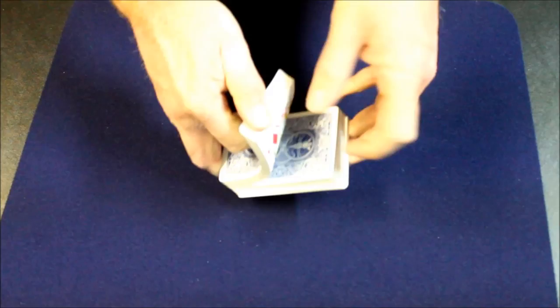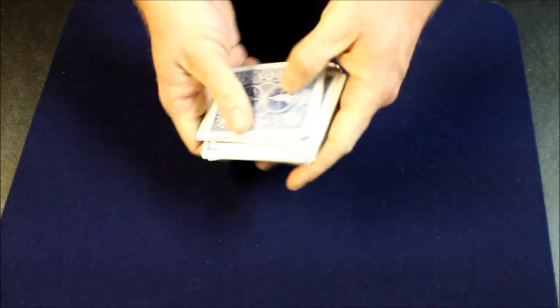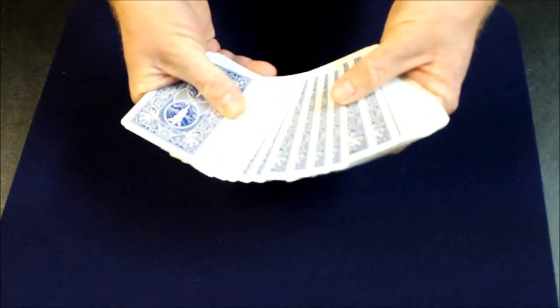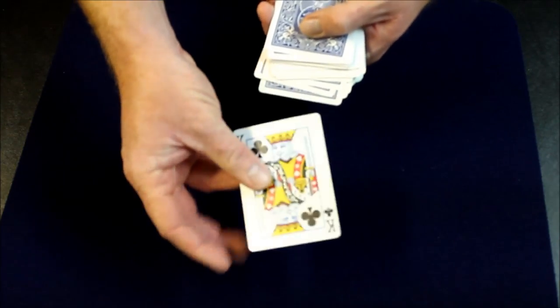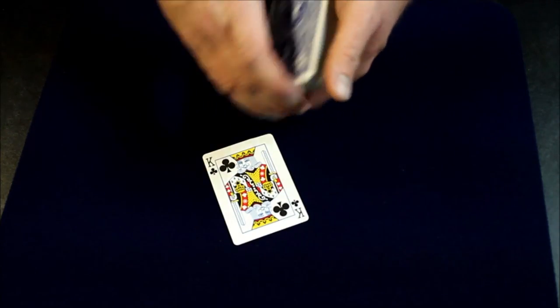Okay, so we'll start off, we'll just give the deck a quick shuffle and then we'll have the spectators select a card. Any card is fine. So in this case they've chosen the King of Clubs.